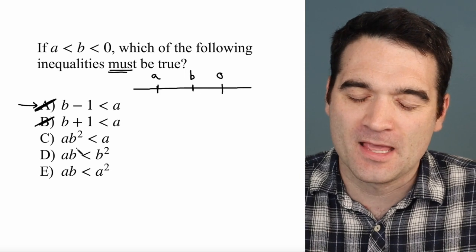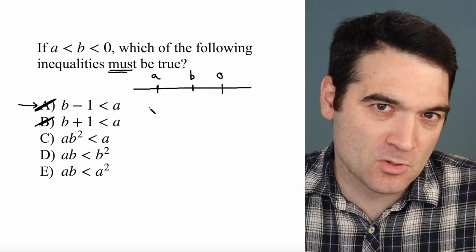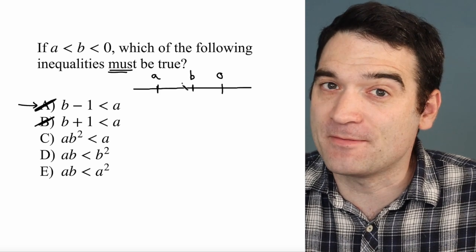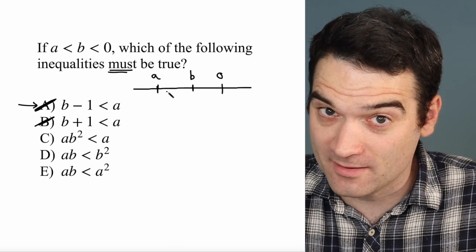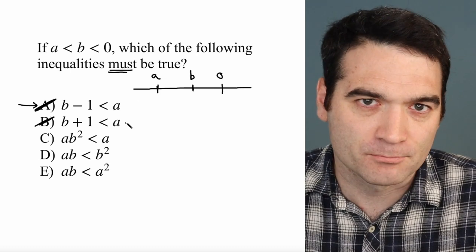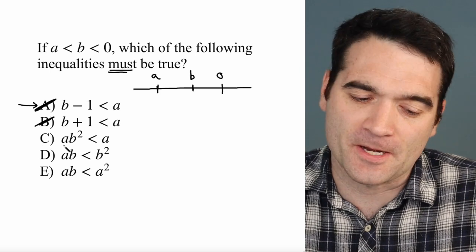Now we get to the more intricate ones. Let me point out something that you might have already noticed or that's pretty obvious. A and B have to be negative numbers, right? A and B are both negative because they're both below zero. Just putting that out there right now. All right. So let's take a look at this one here.